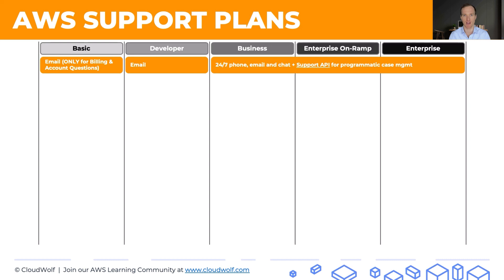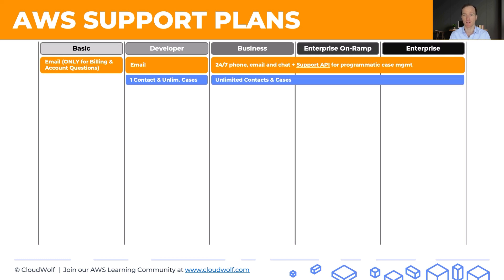In terms of contacts and cases: in the Basic plan, you don't have any contacts or cases. In the Developer plan, you have one contact and unlimited cases — meaning only one person on your team can contact AWS support, which makes sense for an individual developer. The other three plans on the right offer unlimited contacts and unlimited cases.